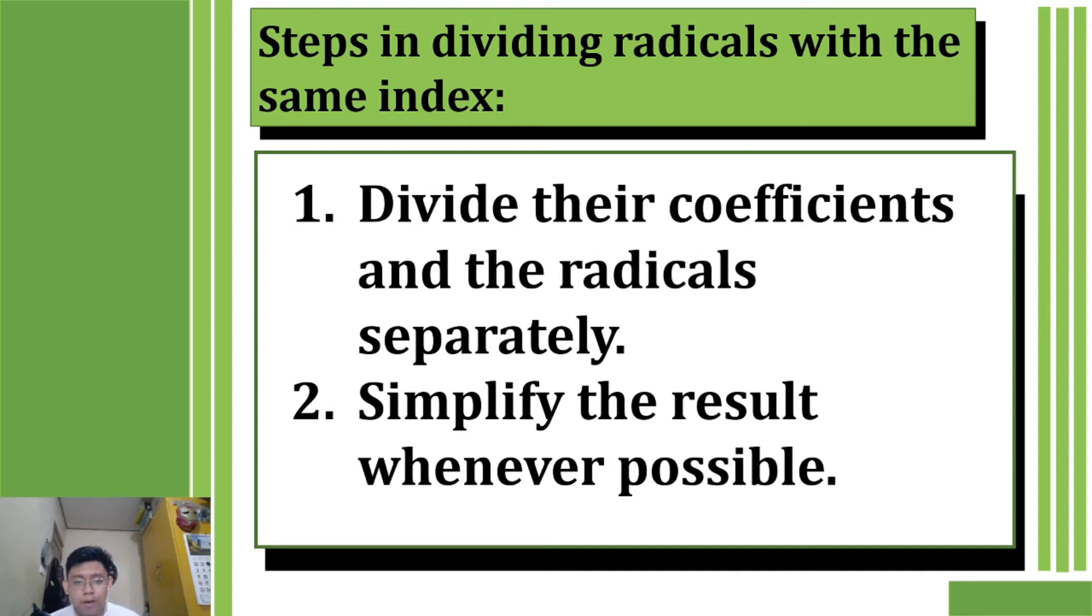First step is to divide their coefficient and their radicals separately. It is the same as multiplication, but this time we're just simply going to divide the coefficient by the coefficient, radicals by radicals. Second step is to simplify the result whenever possible.